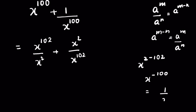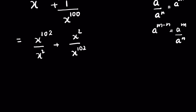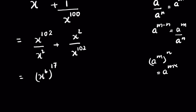So we can write the expression as x^102 / x² + x² / x^102. Now 102 can be written as 6 × 17, so x^102 = (x⁶)^17, using the rule (a^m)^n = a^(m×n). This gives us (x⁶)^17 / x² + x² / (x⁶)^17.